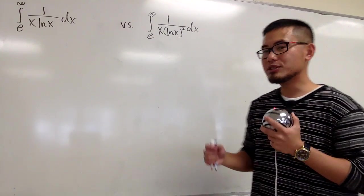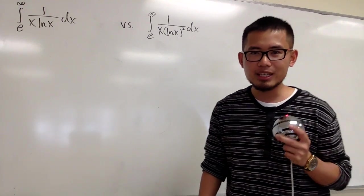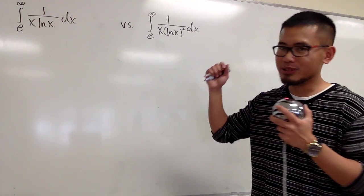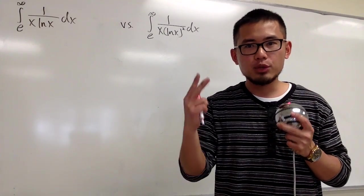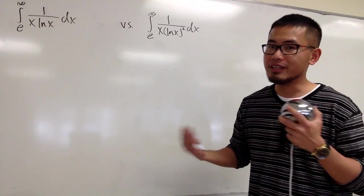Let me just demonstrate. This is how we should work out improper integrals, whenever we can actually integrate them. Use u-substitution and evaluate the limits. And both of these we can actually integrate.